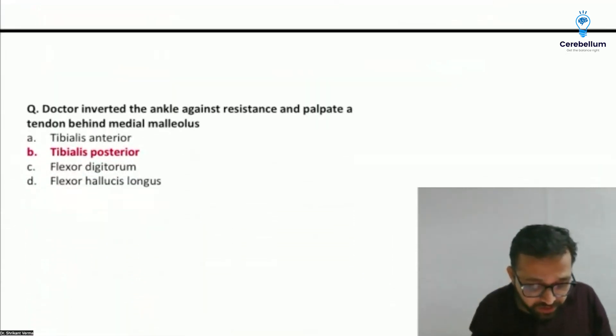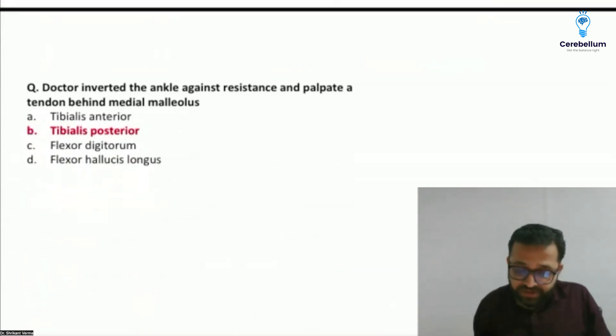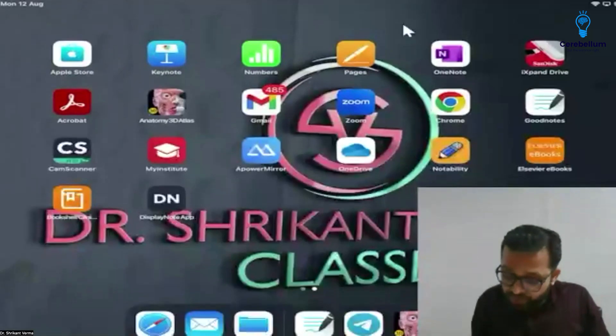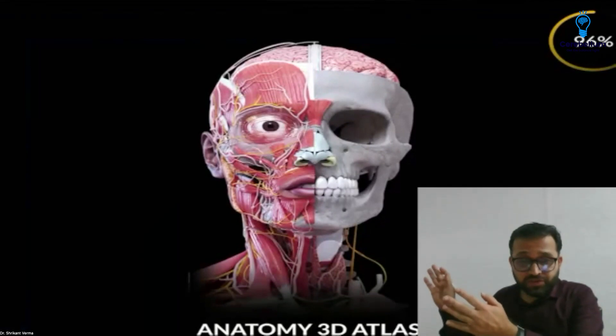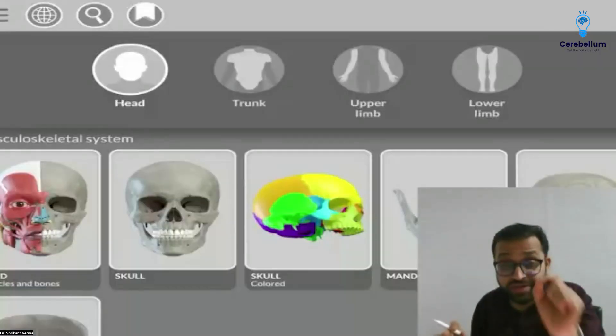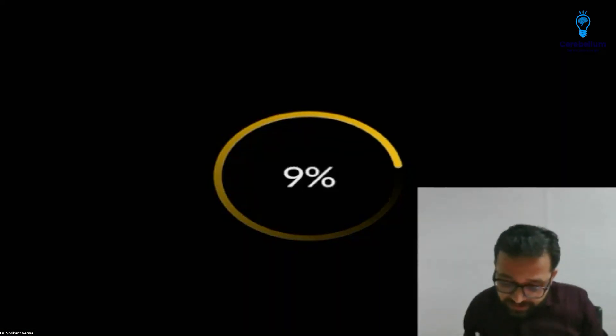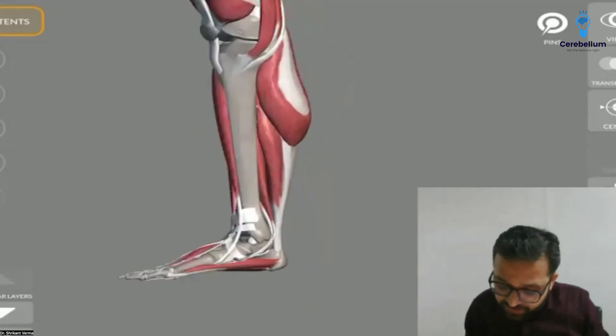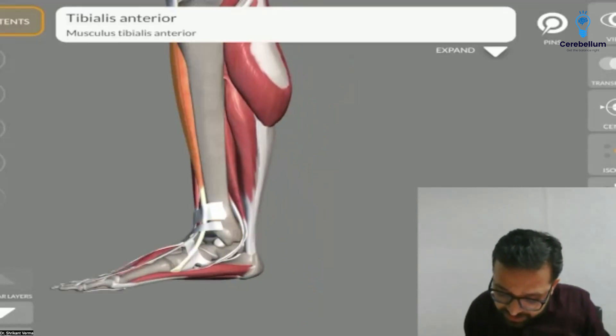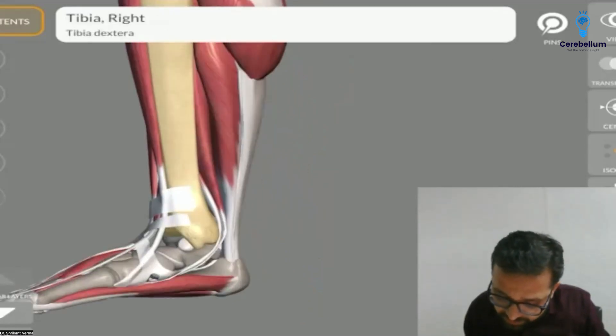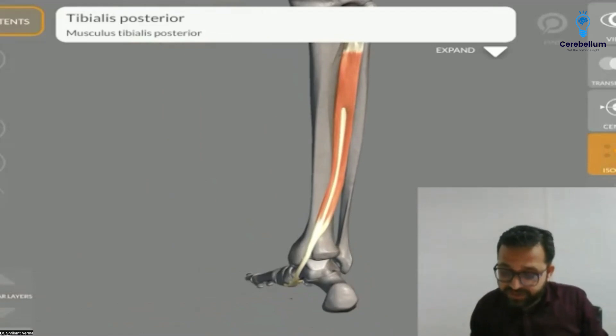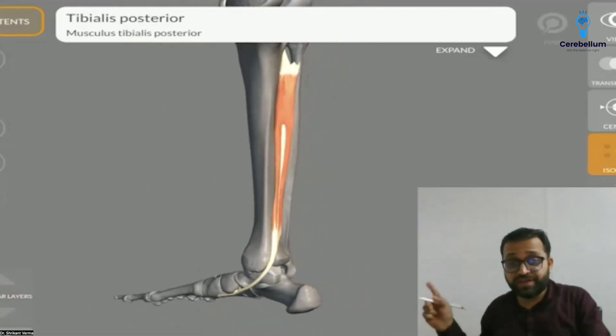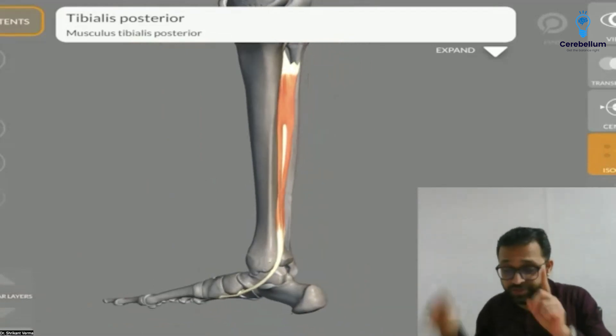Doctor inverted the ankle against the restraint and palpated tendon behind medial malleolus. I had told you many times the inverter and the everter. There was our three-dimensional orientation. In front of the medial malleolus there is the tibialis anterior just in front of the medial malleolus, and just behind the medial malleolus there is tibialis posterior. So tibialis posterior will be the answer just behind the medial malleolus.